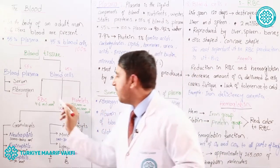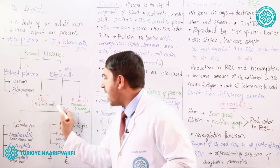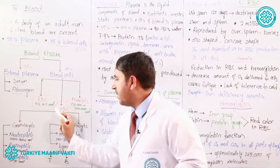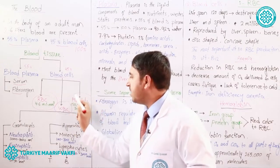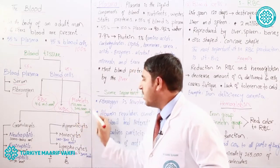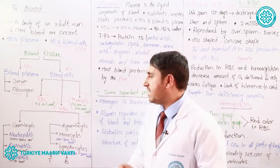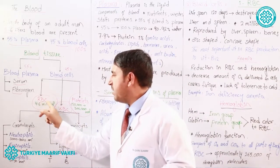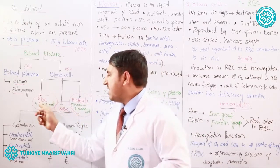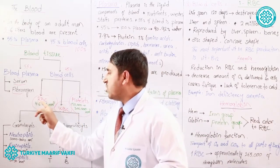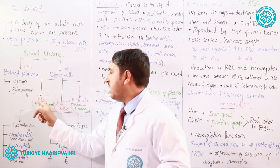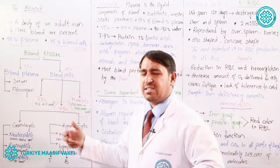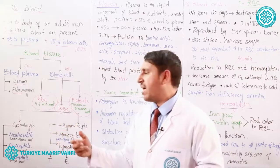Blood cells make up 45 percent of the blood tissue. Three types of blood cells exist in our blood: the first type is RBC, the second type is WBC, and the third type is platelets. RBC stands for red blood cells, also called erythrocytes — RBC, red blood cells, and erythrocytes are all the same.